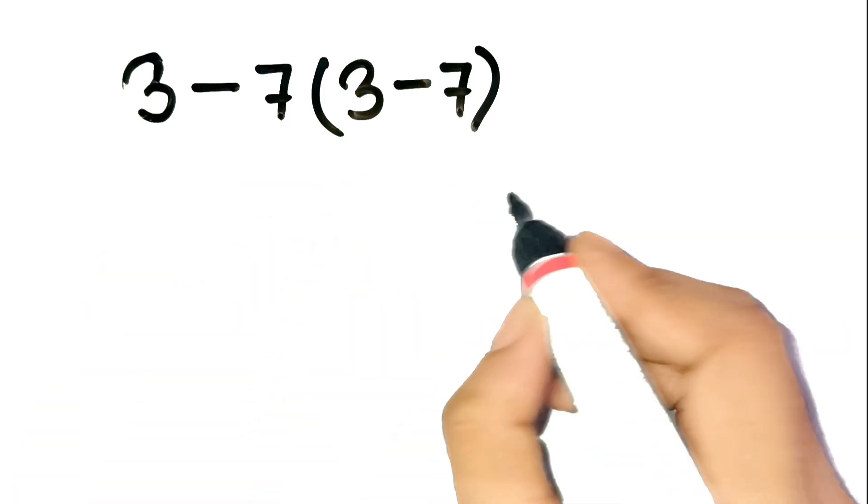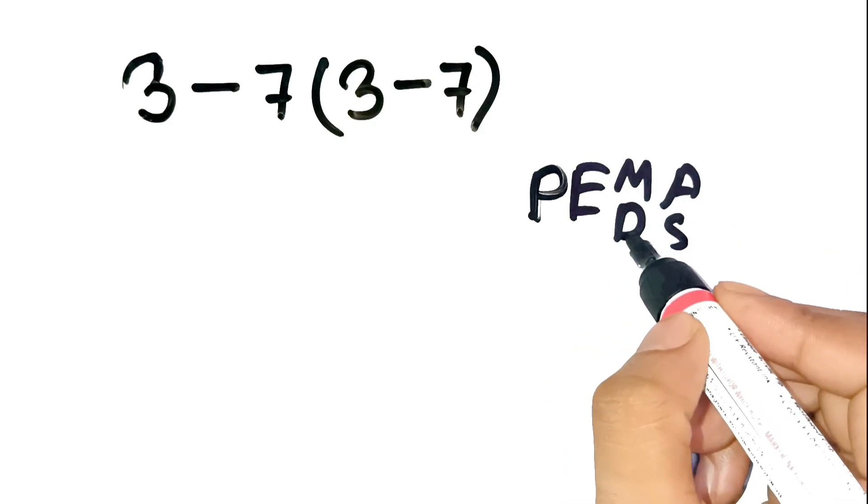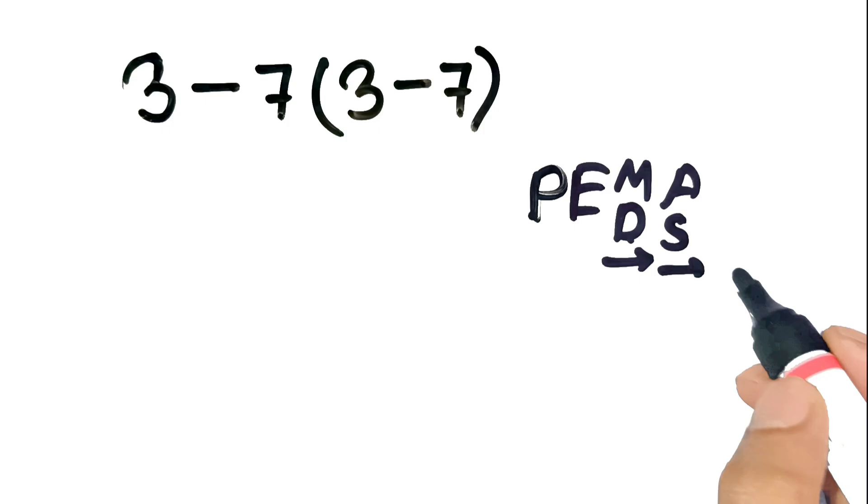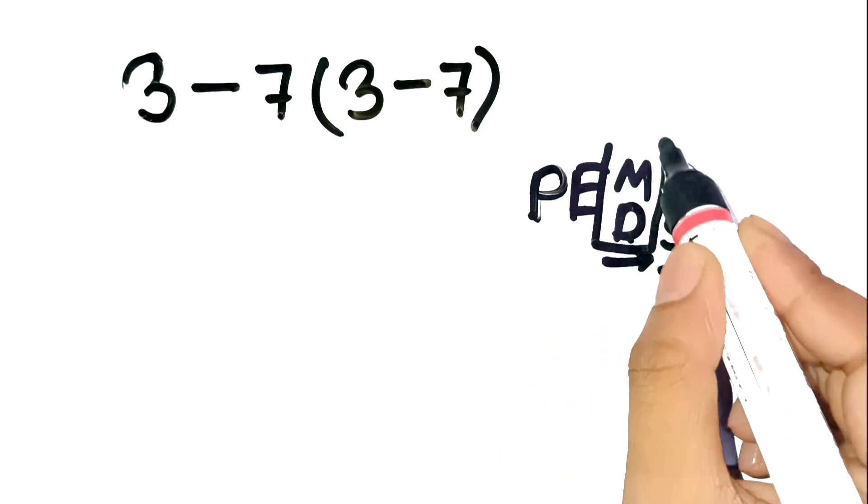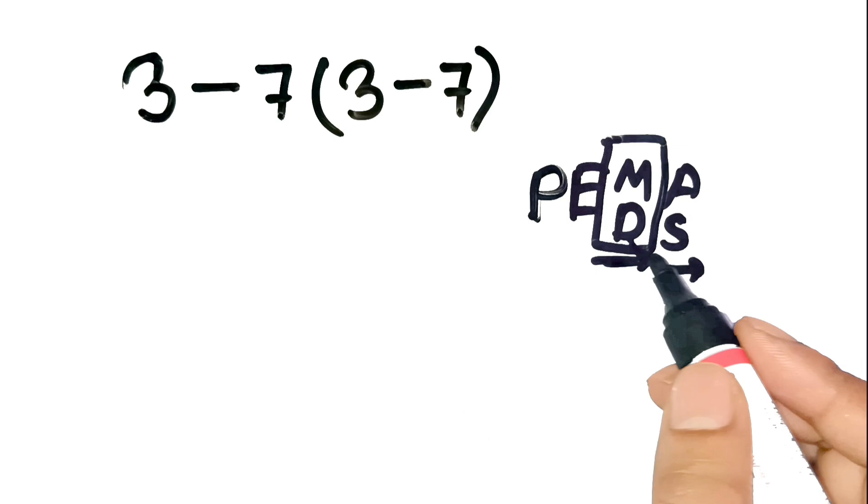The key here is using PEMDAS, which stands for parentheses, exponents, multiplication and division from left to right, addition and subtraction from left to right. Multiplication and division have the same priority. So we go left to right. That's the part most people overlook.